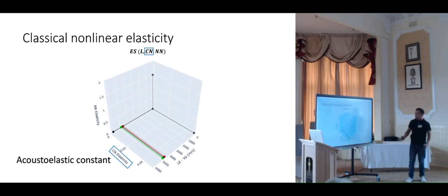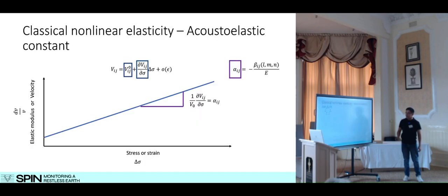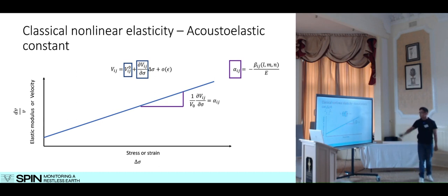Then let's move to the concept of classical non-linear elasticity, and I'm going to analyze this by using the acoustic elastic constant effect. So this acoustic elastic constant allows us to analyze changes in the physical properties of the material. It can be elastic modulus or velocity at different stresses or strain stages. In general, this is a linear behavior in which the independent term gives us information about the initial velocity values in the material. And the slope is precisely the thing that is called acoustic elastic constant. This acoustic elastic constant is also in terms of this beta value, which is a purely non-linear elasticity constant. And at the same time, this is a linear combination of LMM, which corresponds to Murnaghan constants, and E is the Young modulus.